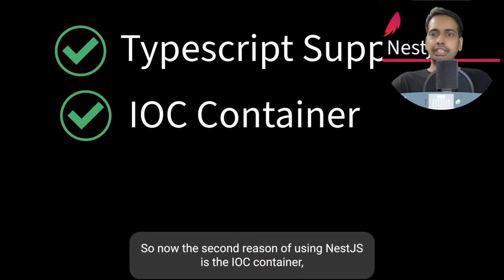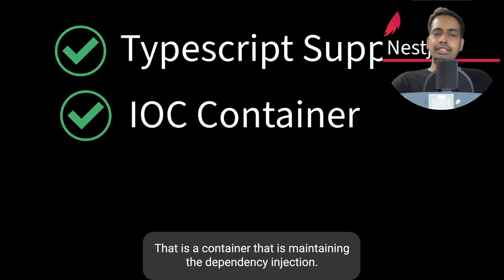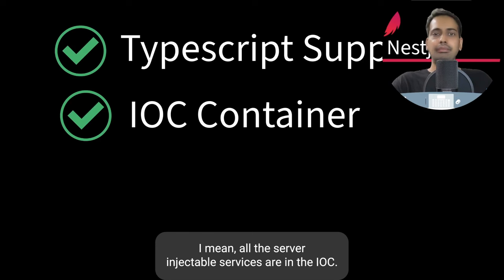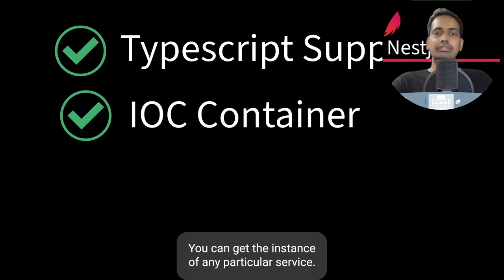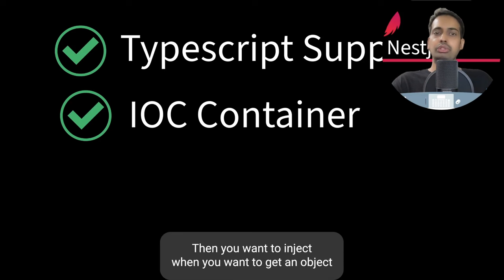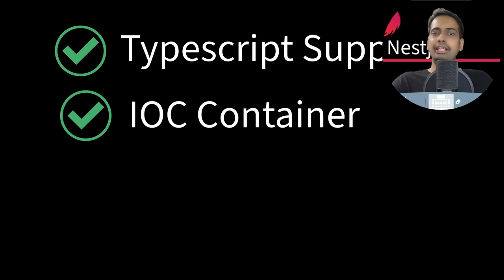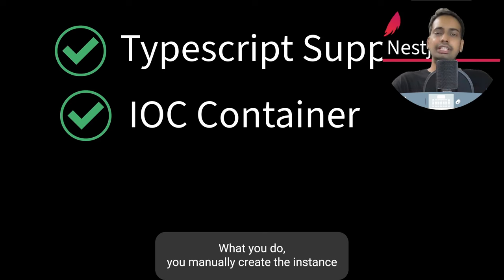The second reason for using NestJS is the IoC container. NestJS provides an Inversion of Control container — a container that maintains the dependency injection tree. All injectable services are in the IoC and you can get the instance of any particular service. Consider an application without a DI framework: when you want to get an object of one service into another service, you manually create the instance.